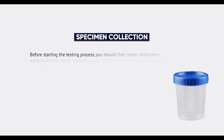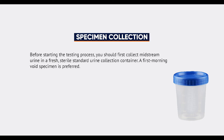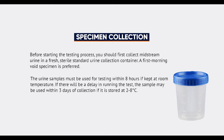Before starting the testing process, collect midstream urine in a fresh, sterile, standard urine collection container. A first morning void specimen is preferred. The urine samples must be used for testing within 8 hours if kept at room temperature. If there will be a delay in running the test, the sample may be used within 3 days of collection if stored at between 2 and 8 degrees Celsius.